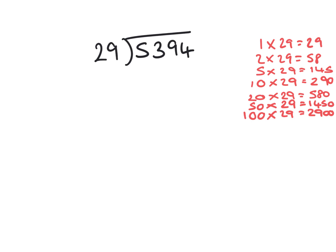The first value I'm going to take away is 2900, which is 100 lots. That leaves me 2494. I can't take 2900 away next time, so I'm going to take a smaller chunk—the 1450 makes most sense. That's 50 lots of 29, leaving us with 1044.